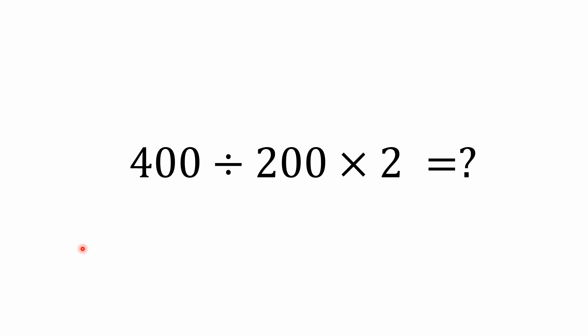It's a fairly simple problem again, but I did want to go over this one just because I've seen a lot of mistakes made on this one and I wanted to just go through that real quickly. The problem is 400 divided by 200 times 2 equals what?